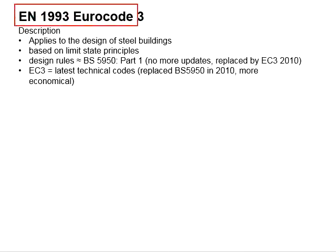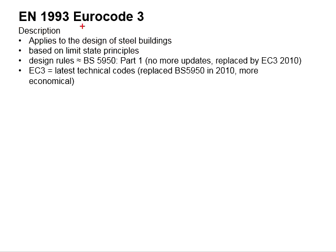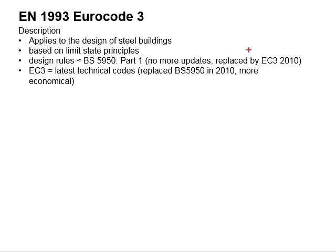Eurocode 3 is used for the design of steel structures on the basis of limit state design principles, and its design rules are very similar to BS 5950. It is noted that BS 5950 is no longer being used — it has been replaced by Eurocode 3 as the latest technical code for the design of steel structures. There will be no updates for BS 5950, so Eurocode 3 has already superseded it.